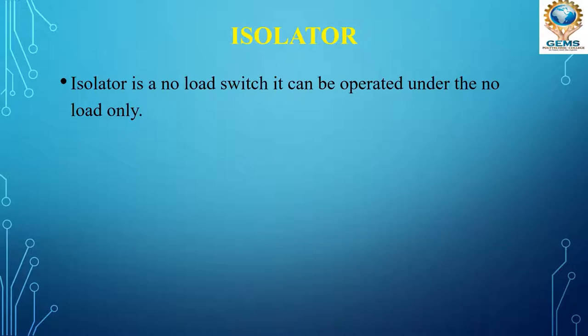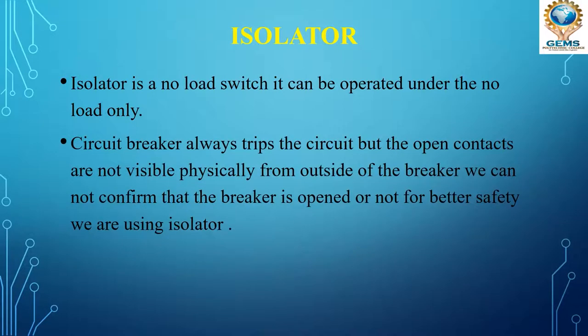Under no load conditions only we can use the isolator. If the load is on, we cannot operate the isolator. A circuit breaker always trips and opens the circuit, but the open contacts are not visible physically from outside the breaker, so we cannot confirm that the breaker is open or not.